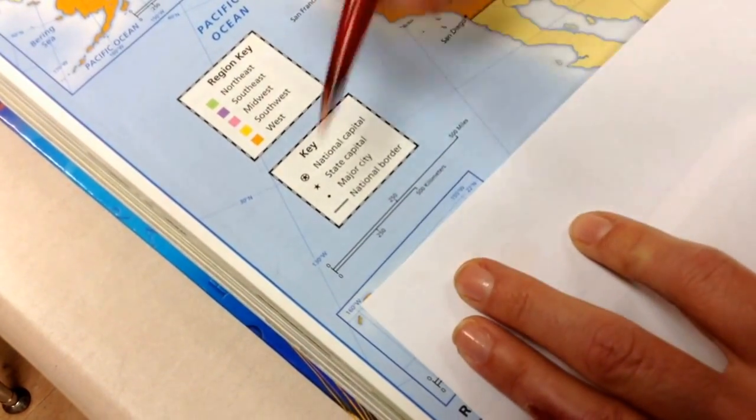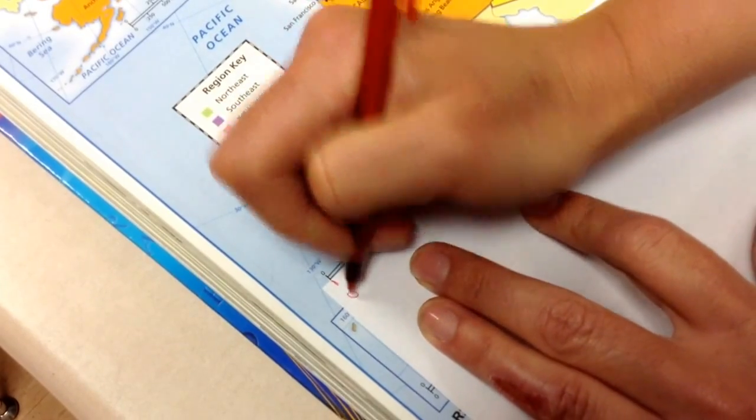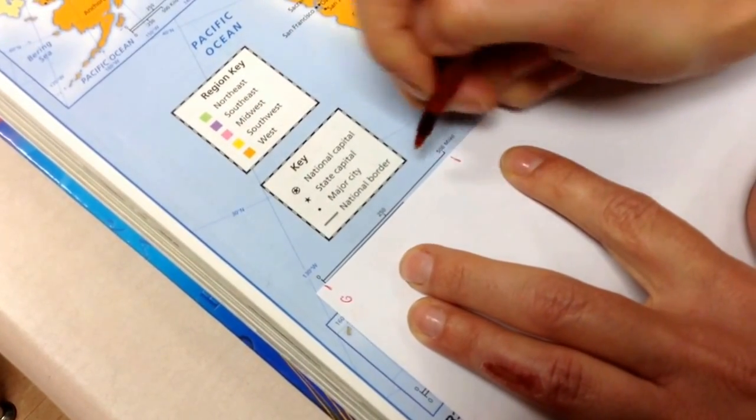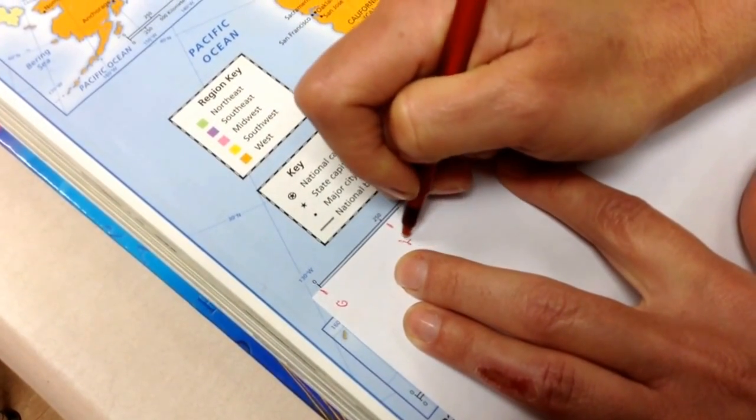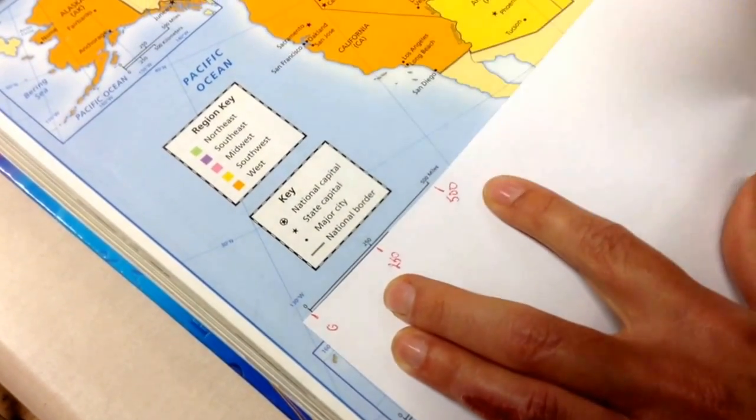So to determine the map, I'm going to use mileage. I know that this is going to be my zero, and this is going to be 500 miles. This is the halfway mark, which is 250 miles. So I'm going to use this like a ruler to measure distance on a map.